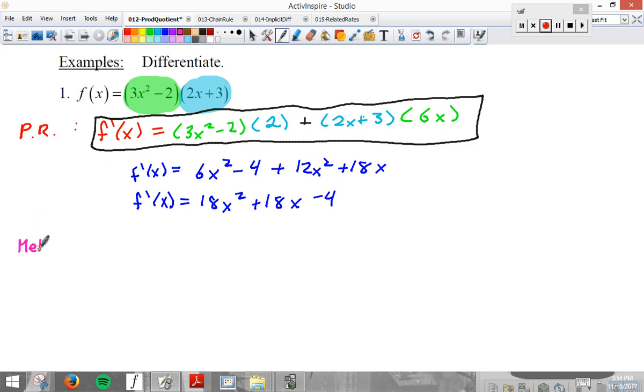Method 2 with no PR, no product rule. Instead we have to rewrite the function first using foil or distribution. 6x cubed plus 9x squared minus 4x minus 6.